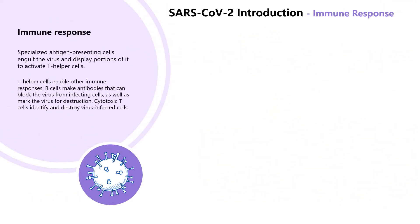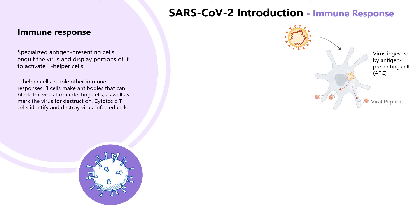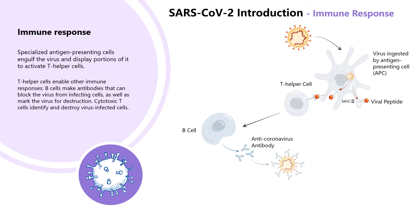When SARS-CoV-2 invades the human body, the antigen presenting cells will engulf the virus and break it down into smaller pieces. Then the smaller viral peptides are presented through MHC2. T helper cells recognize and bind to the presented viral peptides to be activated. T helper cells can further trigger other immune responses: stimulate B cells to produce antibodies, which can prevent viruses from infecting cells and mark viruses for destruction, and activate T cells to become cytotoxic T cells, which further recognize and destroy virus-infected cells.